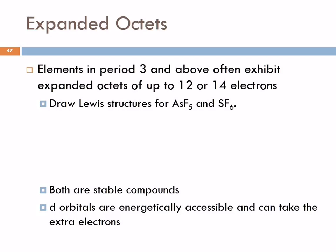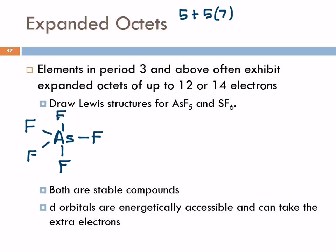Let's draw Lewis structures for arsenic pentafluoride and sulfur hexafluoride. So arsenic is going to have five fluorines around it. If we add up the valence electrons, we've got five for arsenic and five times seven for the fluorines — that's 35 plus 5, so 40 total.